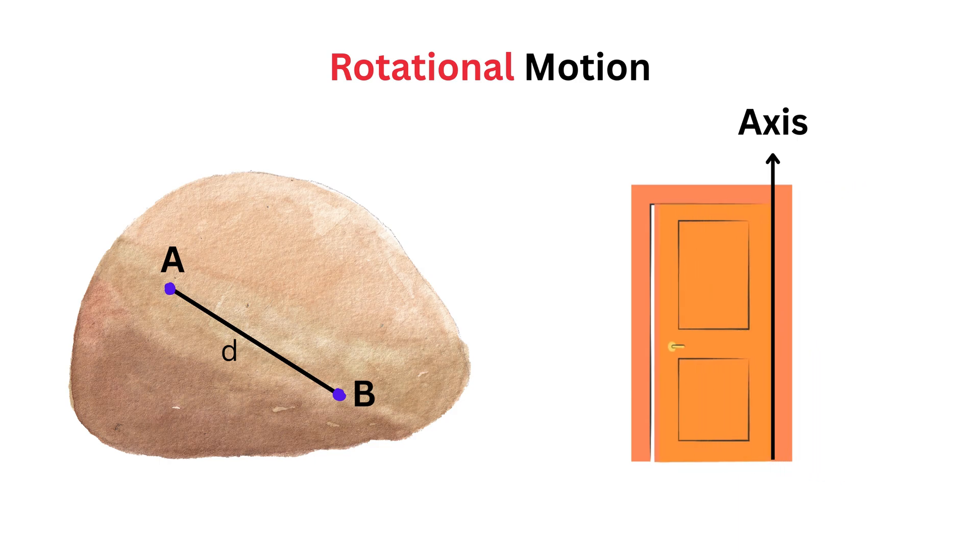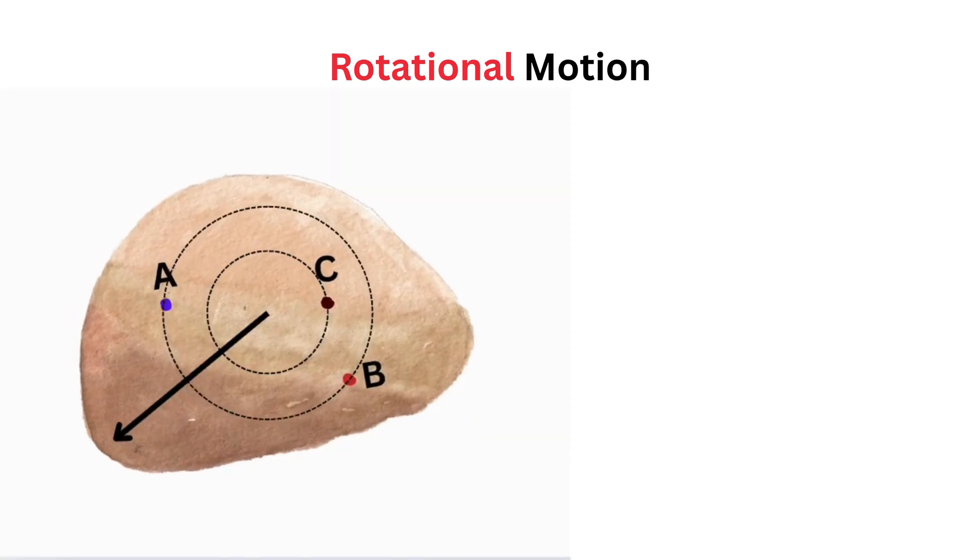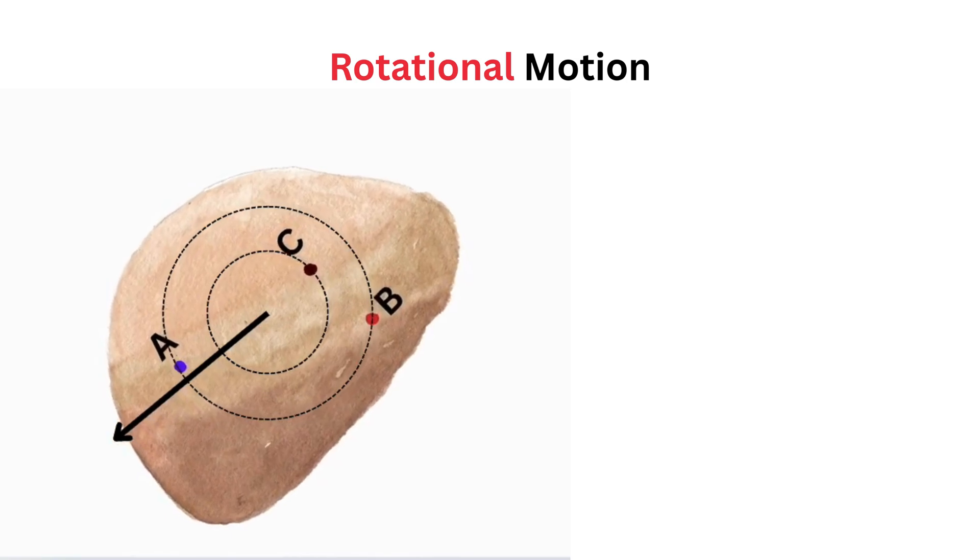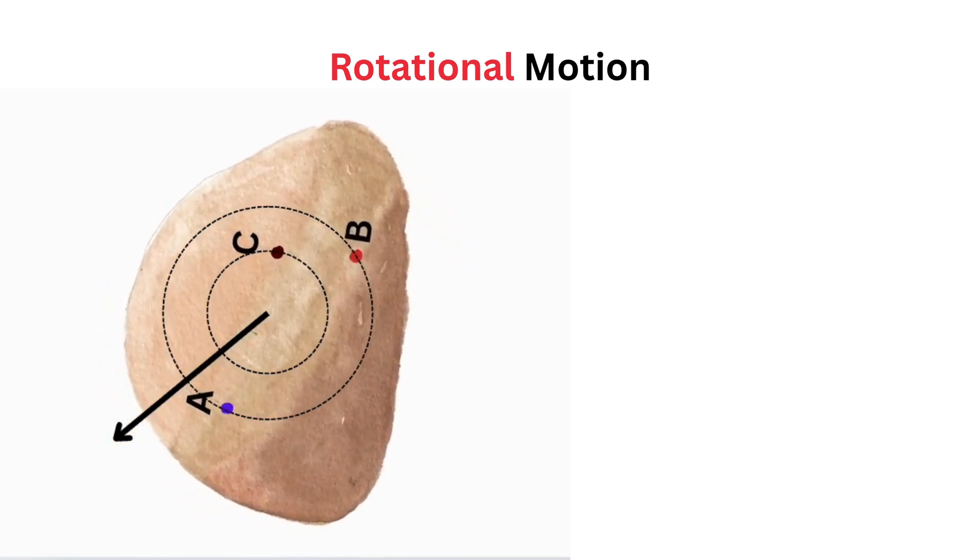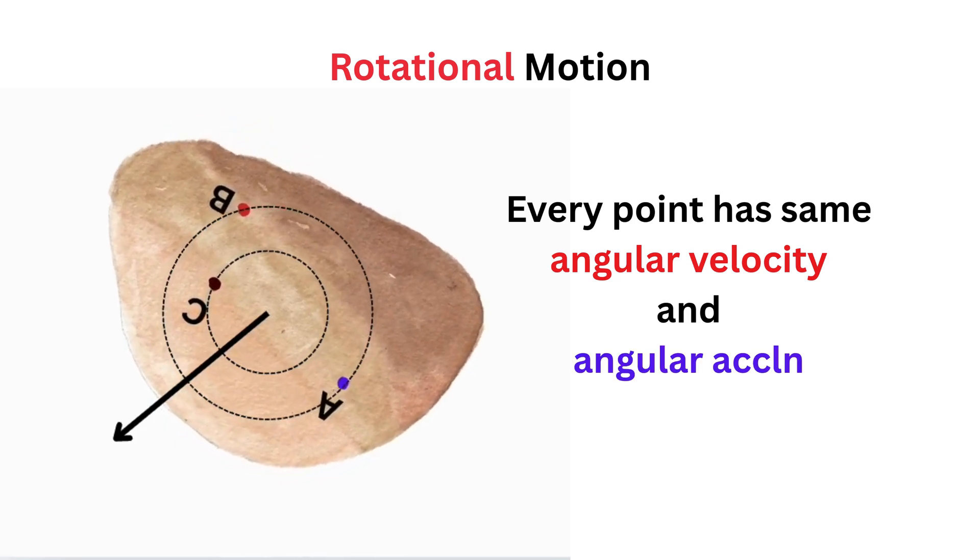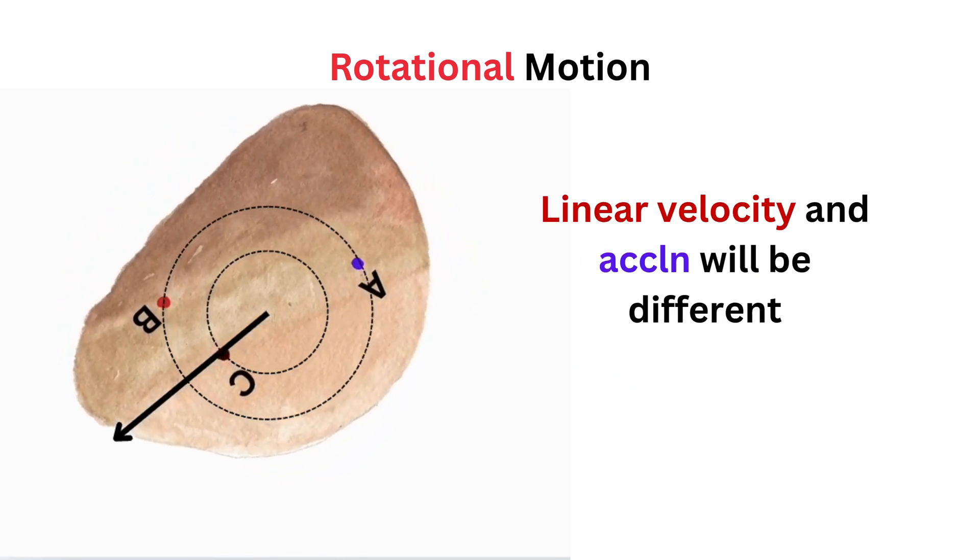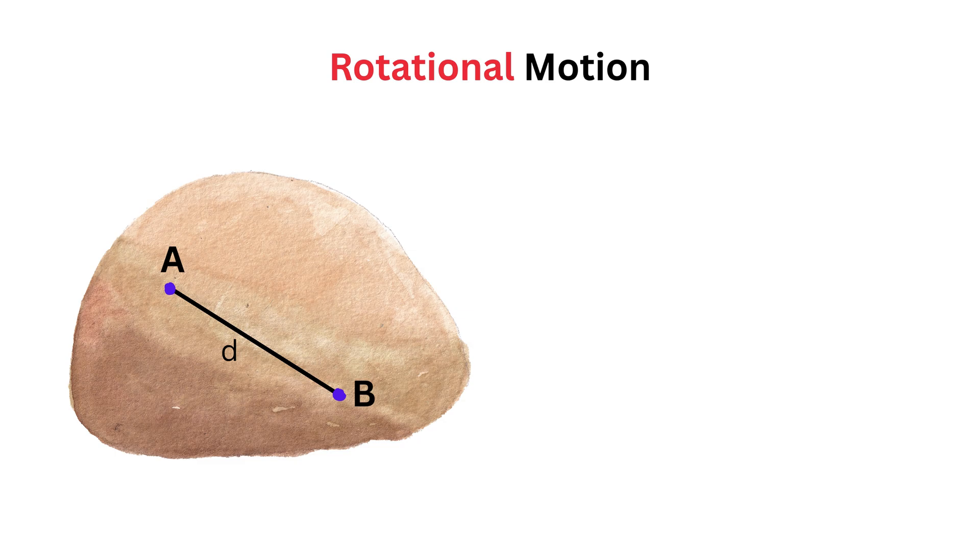An important thing to note is that each point or particle of the rigid body moves in a circle centered on the axis, and every point has the same omega or angular velocity and alpha or angular acceleration. But the linear velocity and acceleration will be different. Since the body is rigid, the distance D between point A and point B stays the same throughout the motion.